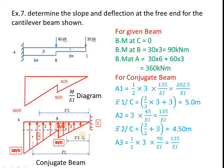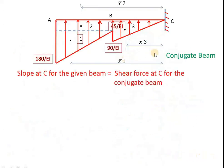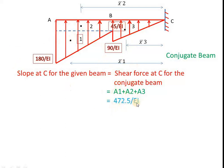Area A3 is a triangle: 1/2 × 3 × 90/EI = 135 by EI. Its centroid x3 bar from C is 2/3 × 3 = 2 m. Now the slope at C for the given beam is the shear force at C for the conjugate beam, which is the algebraic sum of all vertical forces — that is, area A1 plus A2 plus A3. Adding all three areas gives 472.5 by EI as the shear force at C, which equals the slope theta C for the given beam.